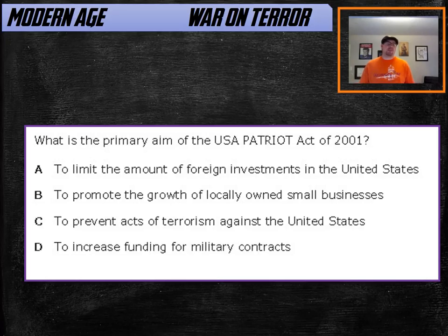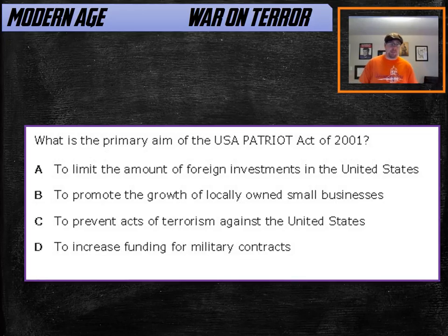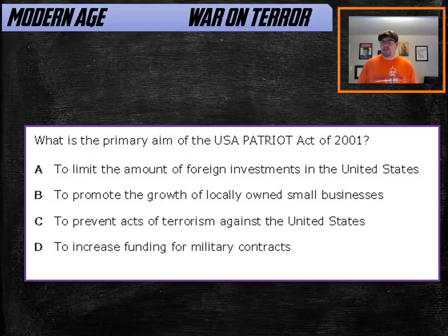The War on Terror can also be seen to include domestic legislation like the USA PATRIOT Act. The Patriot Act was designed immediately following 9/11 to make it easier for the US government to prevent acts of terrorism. It made it easier for law enforcement to hold suspects without trial for up to 72 hours without charging them, giving time to build a case. It also made it easier for the government to surveil suspected terrorists, infringing upon civil liberties somewhat in order to discover domestic threats.